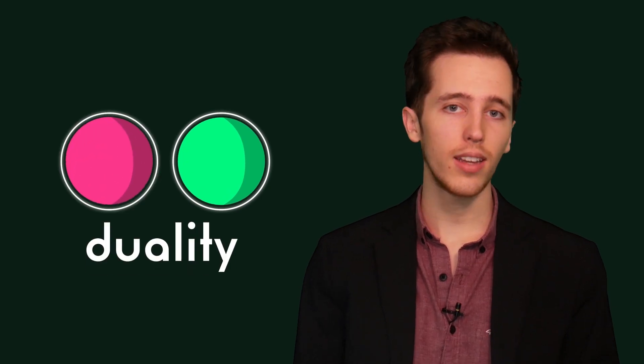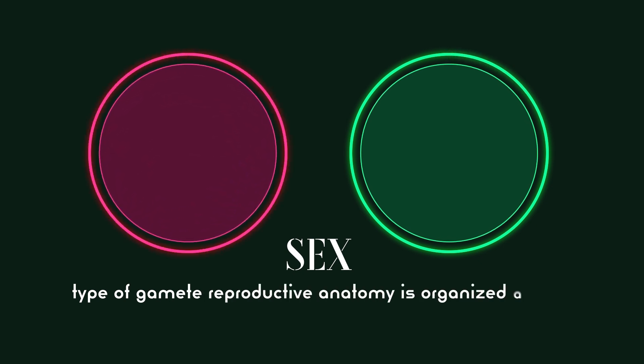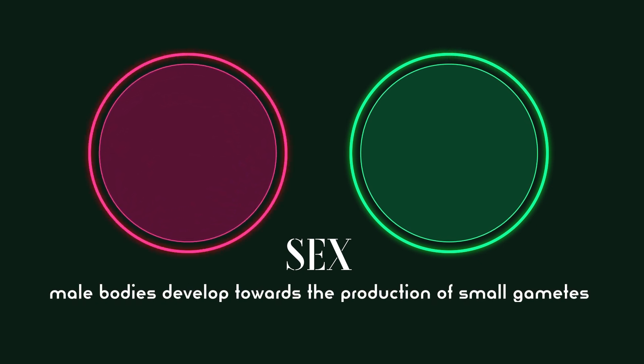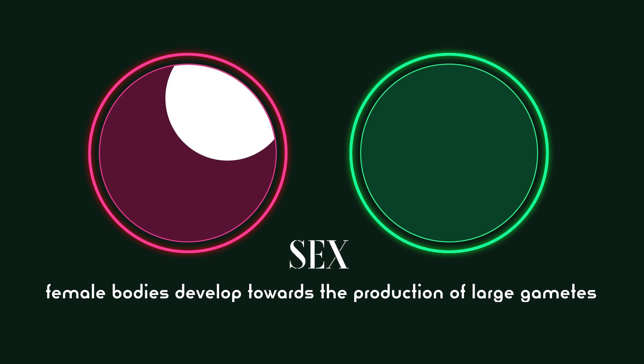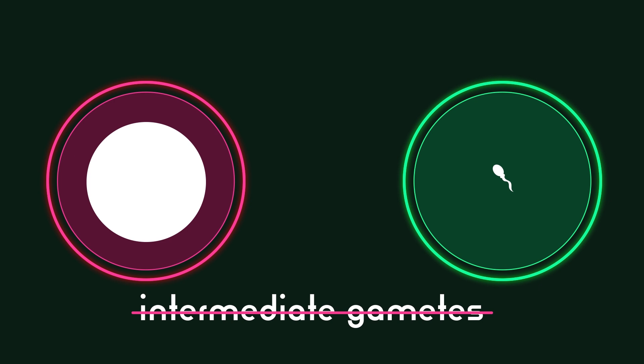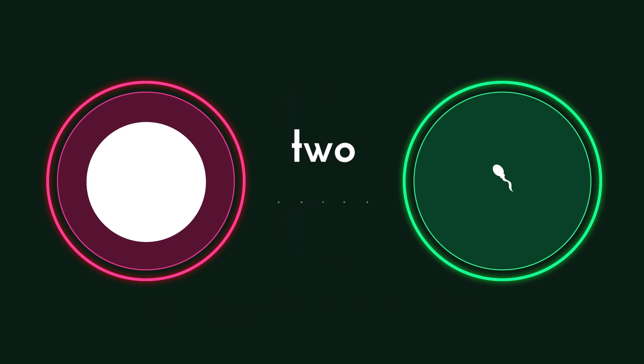A binary is a system composed of two parts — a duality, a pair. In developmental biology, sex is binary. Here's why. An organism's sex is defined as the type of gamete that reproductive anatomy is organized to produce. Male bodies develop towards the production of small gametes, sperm, whereas female bodies develop towards the production of large gametes, ova. Because there are no intermediate gametes between sperm and eggs — such as the often joked about 'sperg' or 'spegs' — there are therefore only two sexes.